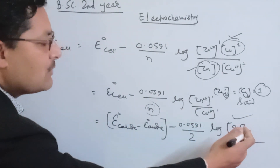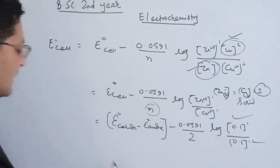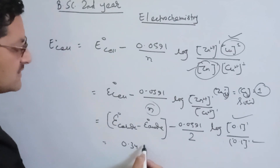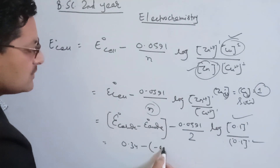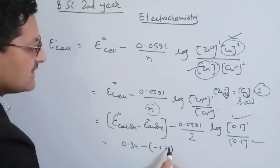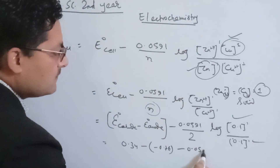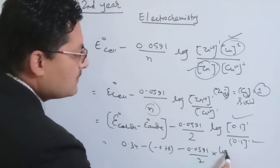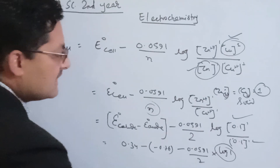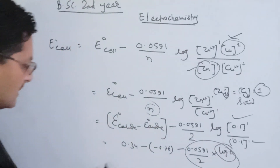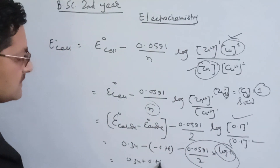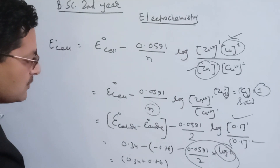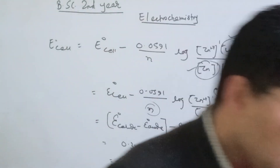Now we simplify. We have E°(Cu²⁺/Cu) = 0.34 V and E°(Zn²⁺/Zn) = −0.76 V, so E° cell = 0.34 + 0.76 = 1.10 V. The term (0.0591/2) × log(0.1/0.1) = (0.0591/2) × log(1) = 0, since log 1 equals 0. Therefore, E cell = 0.34 + 0.76 = +1.10 V. The answer is +1.10 V.